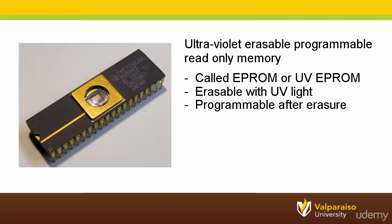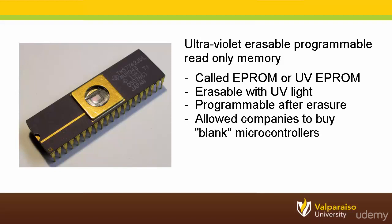EEPROMs overcame some of the limitations of ROM. Since they did not require the program to be built into the microcontroller during manufacturing, companies could purchase and keep blank EEPROM microcontrollers on hand to be programmed just before they were assembled in their final embedded system. This would allow a company to make a rapid change in their program without having to wait for new masked ROM parts to be built. While this did take several minutes, it was much better than waiting weeks or months for new masked ROM parts.